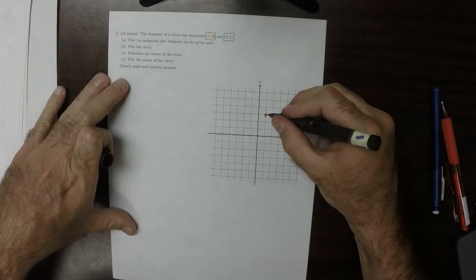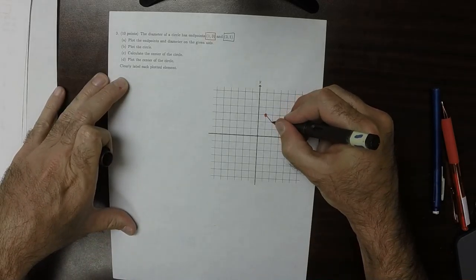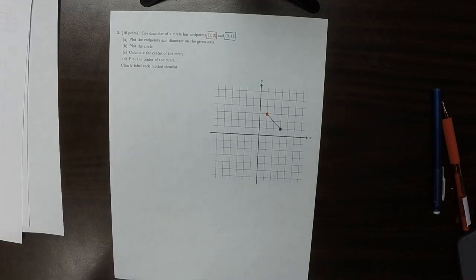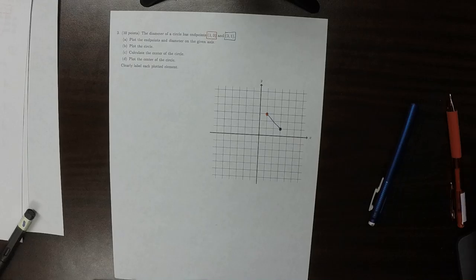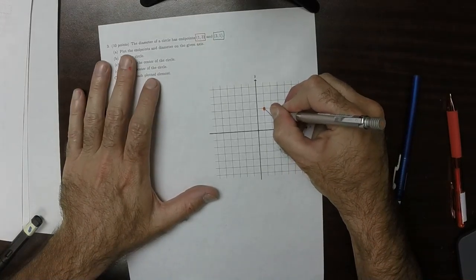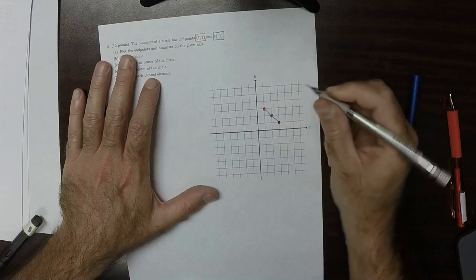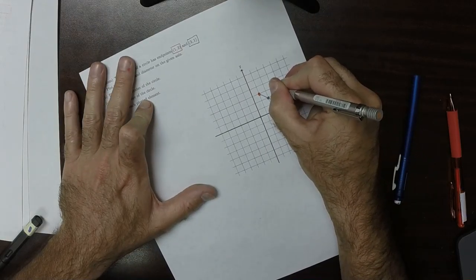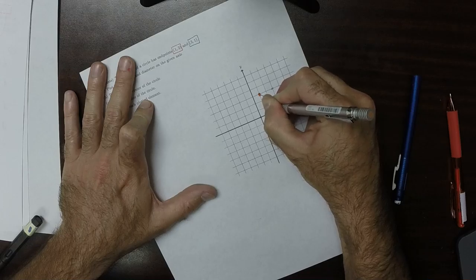OK, so the diameter means the line connecting them. OK, and we want the circle. So there's a circle with this center and that diameter. So it also has this point must be on it, and that point must be on it as well.